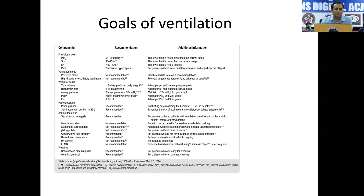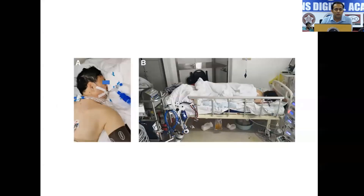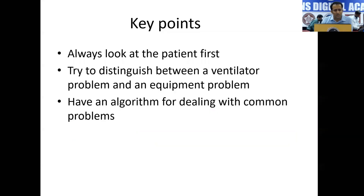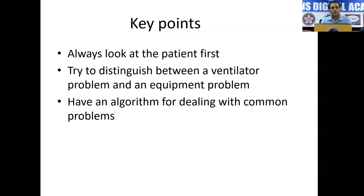Goals of ventilation have already been covered by Dr. Sunil. Prone ventilation is an option, but trouble will be the manpower and PPE required — so all caution has to be taken. Key points: always look at the patient first. Try to distinguish between a ventilator problem and an equipment problem. Have an algorithm for dealing with common problems. Because it is a pandemic situation, we have to concentrate on simple issues.